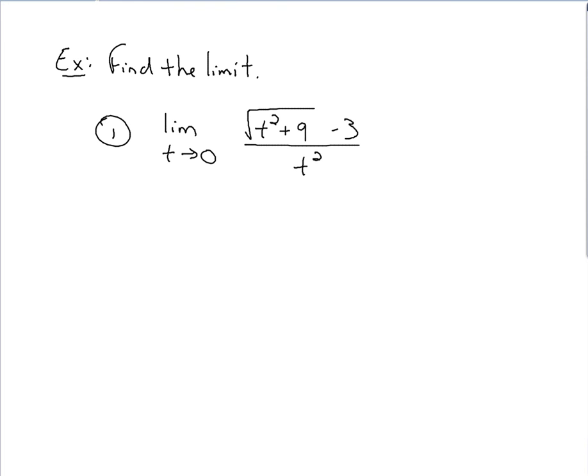So you've got a limit problem where roots are involved, but we start the same way we always do. We're taking, in this case, what t is approaching, so 0, and we're plugging that in for the t's within this function. When you plug in, you should find that you get 0 over 0 back. So as we know now, that's a problem. The only other option we have up to this point, whenever we get 0 over 0 back, is to do some kind of factoring.